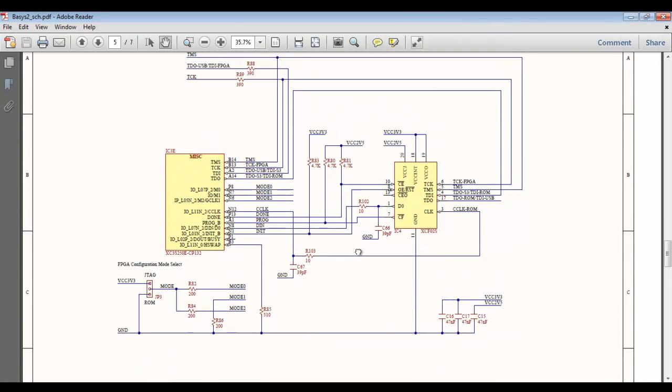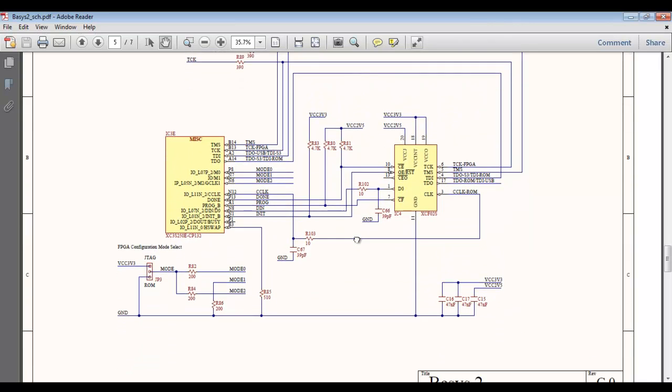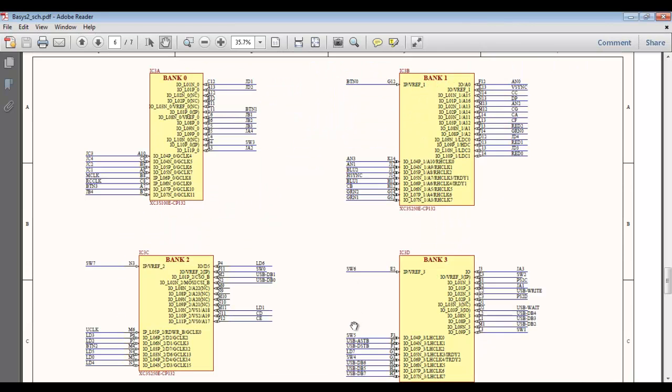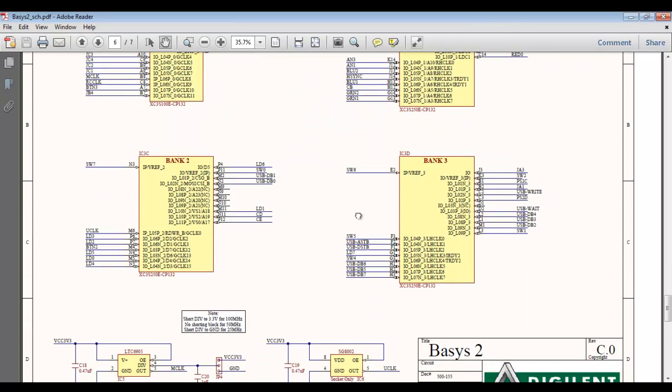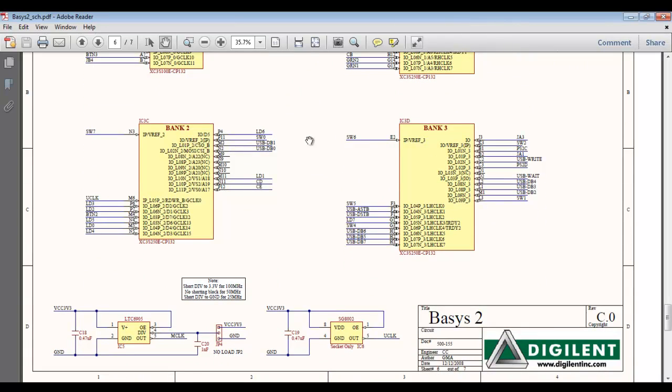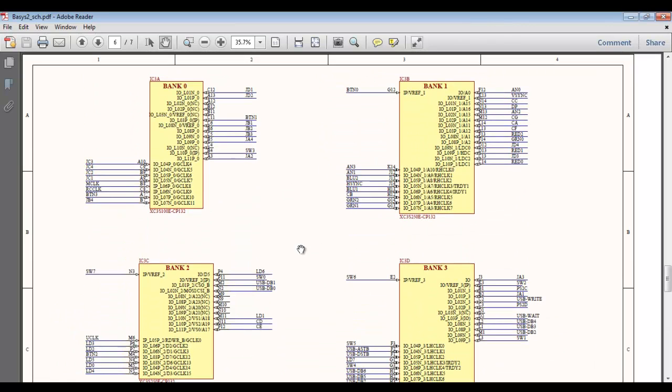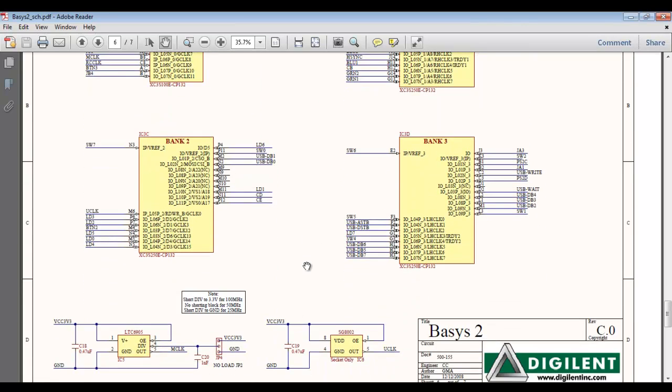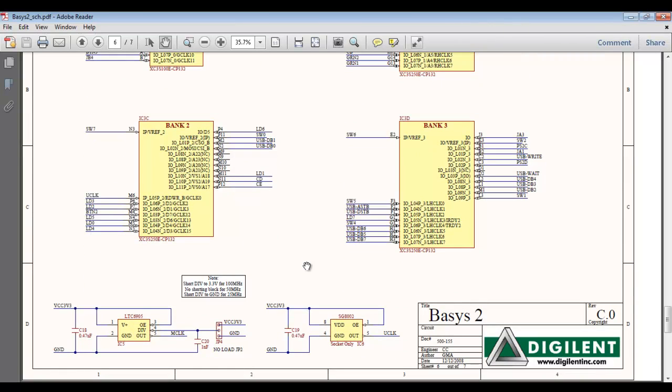The next page shows the FPGA itself, and the following page shows all of the IOs and all of the nets which are connected to the other parts of the circuit.